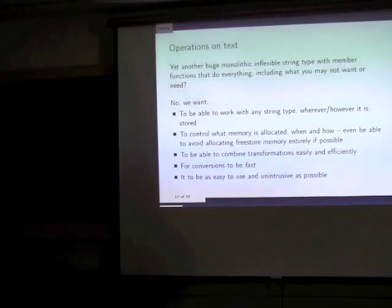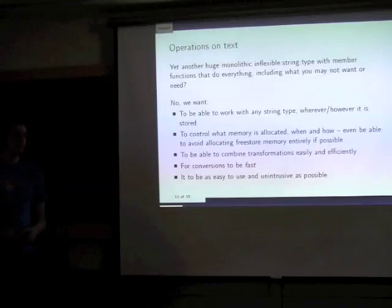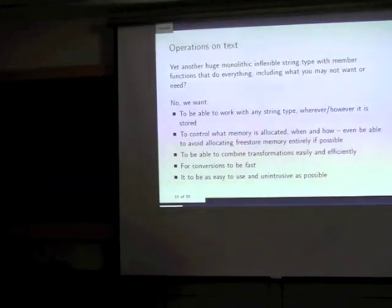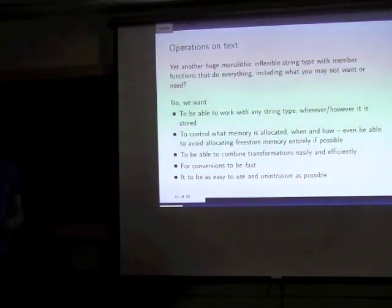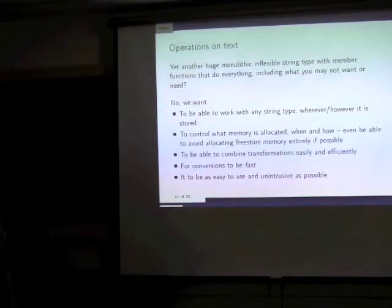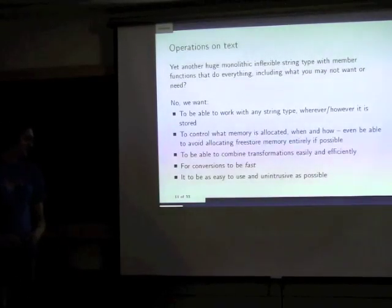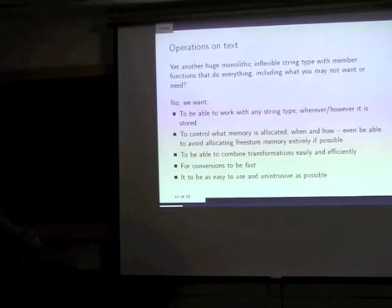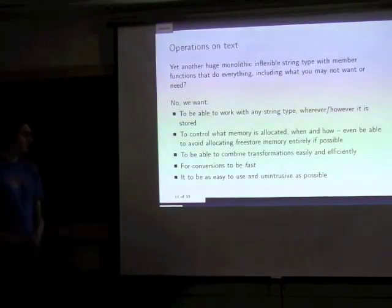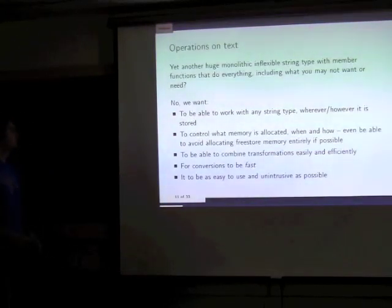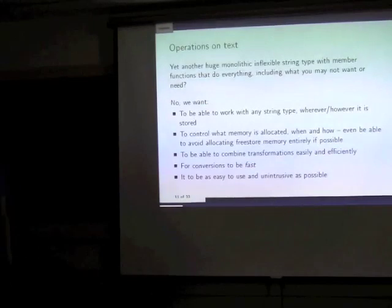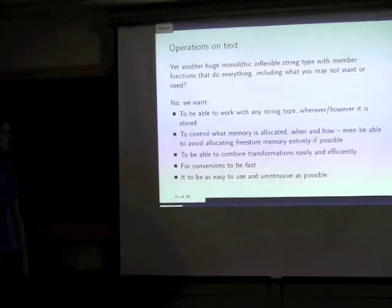I want the algorithms to work with any string type wherever it is stored, with as little memory allocation as possible, and control when allocation occurs. I want to combine different types of transformations, have it be fast, avoid duplication — define something once and reuse it for many things — and make it easy to use. I hope the design I came up with satisfies these goals.